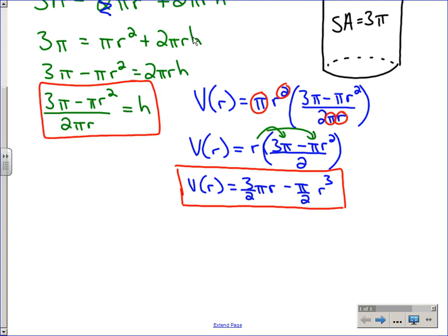If I'm trying to find the maximum, I want to take the derivative. V'(r)—r is our variable, so 3/2 π is the constant, so the derivative of that first one is just 3/2 π. The second one: drop the 3 down, so it's minus (3π/2)r². We're trying to find horizontal tangents, so we set it to zero.